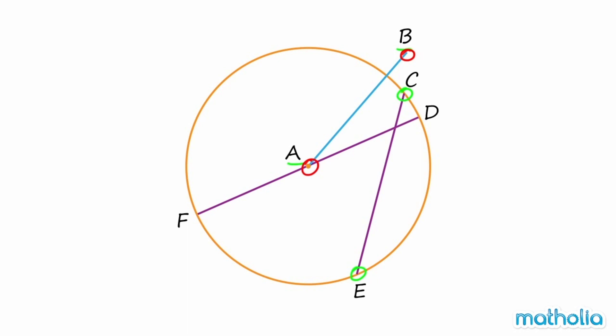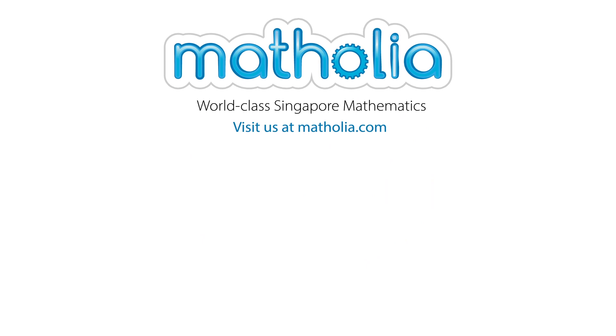Line FD is a straight line. It passes through the centre and its endpoints are on the circle, so line FD is a diameter of the circle.